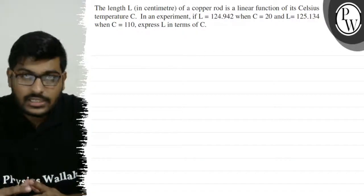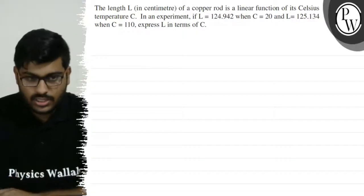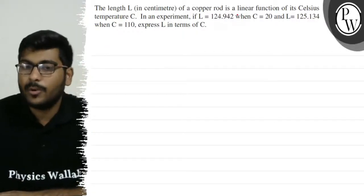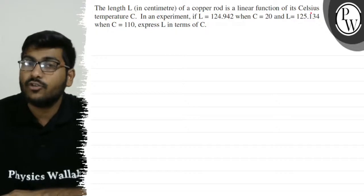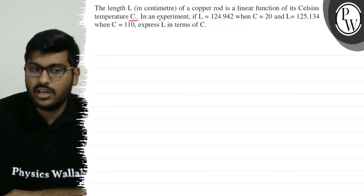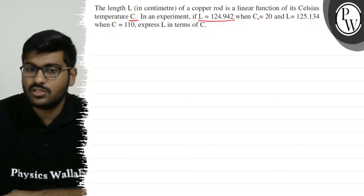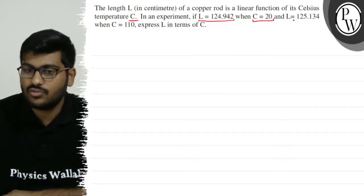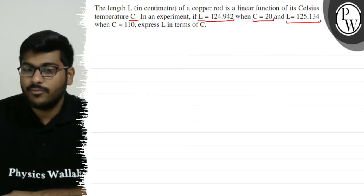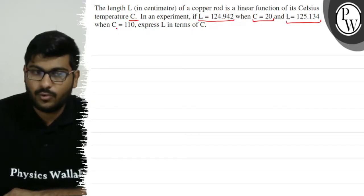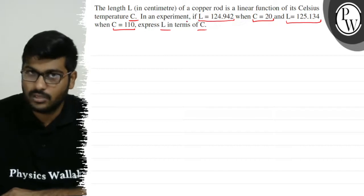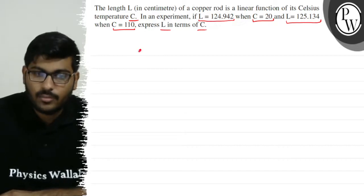The question is: the length l in centimeters of a copper rod is a linear function of its Celsius temperature c. In an experiment, l equals 124.942 when c equals 20, and l equals 125.134 when c equals 110. Express l in terms of c.